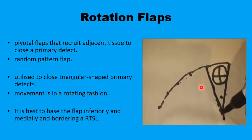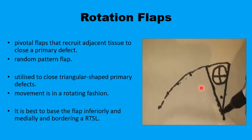This eases the mobilization of the flap into the defect and reduces tension on the suture line. The movement of the flap into the defect is of a rotation pattern. It is best to have the base of the flap facing medially and downwards, as that gives the best possible vascularity in the face and also helps with lymphatic drainage.